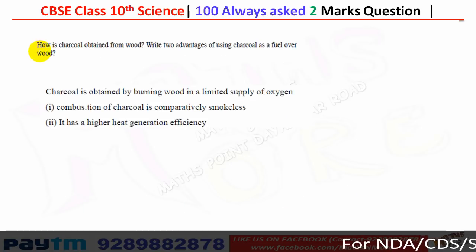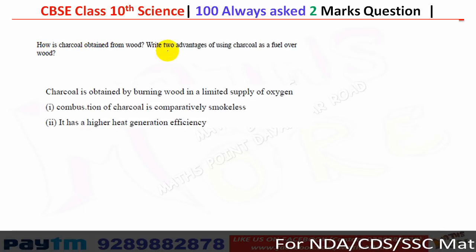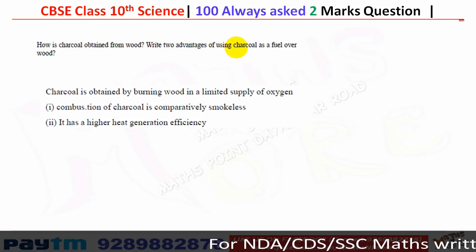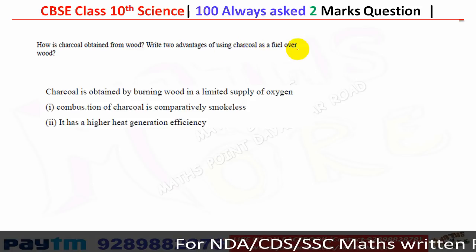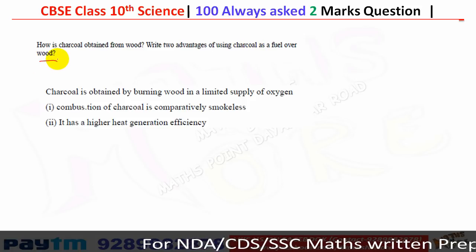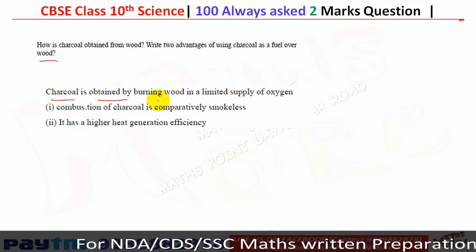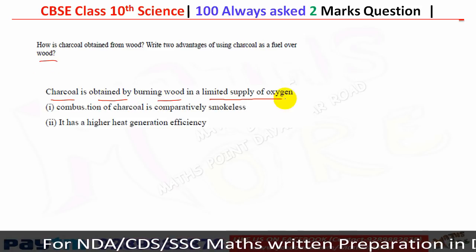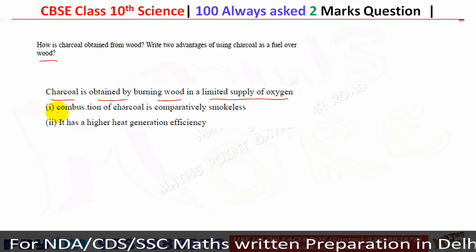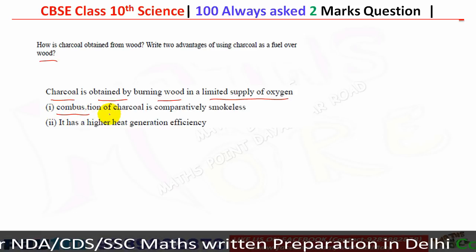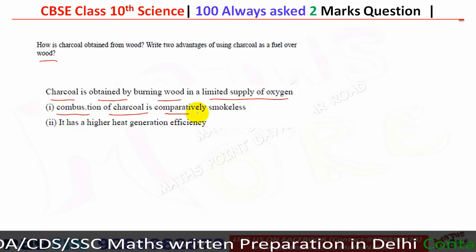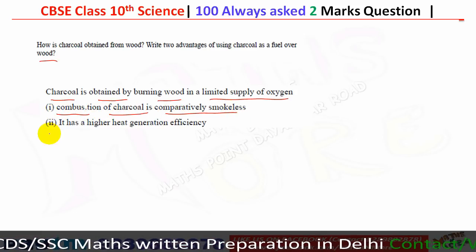How is charcoal obtained from wood? Give two advantages of using charcoal as a fuel over wood. Charcoal is obtained by burning wood in a limited supply of oxygen. Combustion of charcoal is comparatively smokeless and it has higher heat generation efficiency compared to wood.